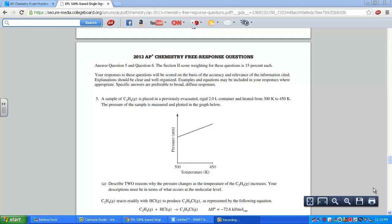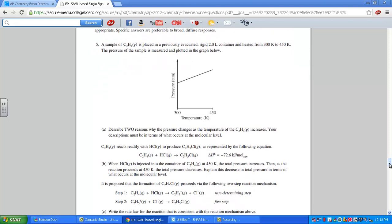We start to heat it up, 300 Kelvin to 450 Kelvin, and the pressure of the sample is measured below. We can see a direct relationship as the temperature warms. The pressure is increasing. Letter A, we want two reasons why the pressure changes as the temperature of the acetylene C2H4 increases, and be sure that you're answering that at the molecular level.